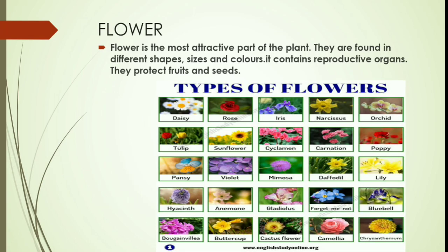What is a flower? You will say that it is the most beautiful part of a plant which has fragrance, different colors, and different shapes and sizes. So let us study the definition: a flower is the most attractive part of the plant. They are found in different shapes, sizes and colors. It contains the reproductive organs of a plant and they protect fruits and seeds.